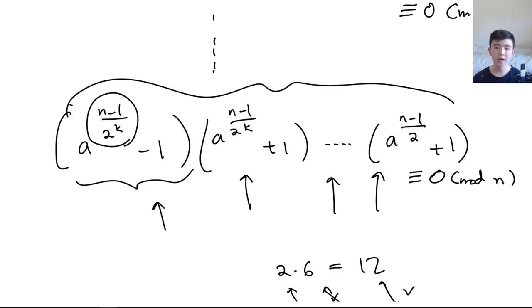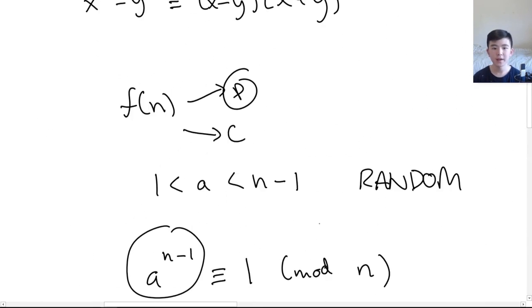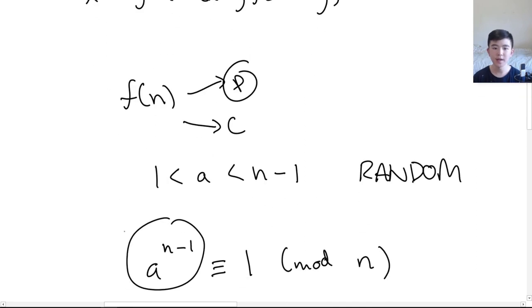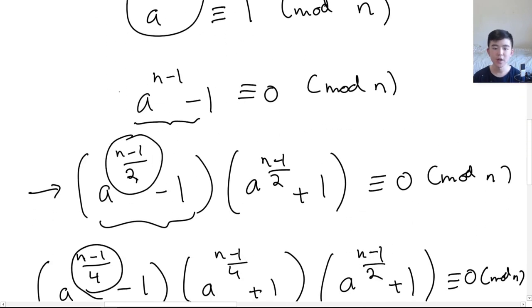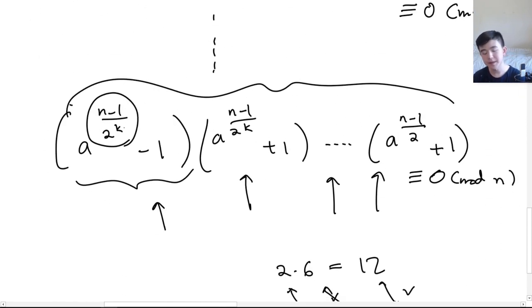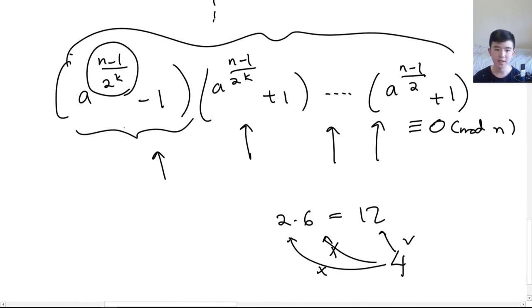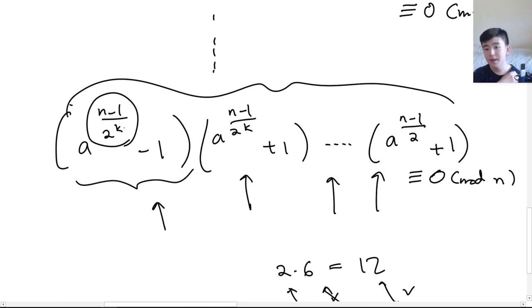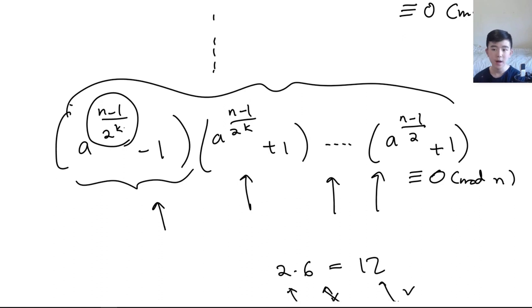To summarize: we're given n, we take a random value of a between 1 and n − 1, we follow these steps using the difference of squares factorization, and arrive at a conclusion. If n divides at least one of these terms then n is probably prime; however, if n divides none of them then n is definitely composite.